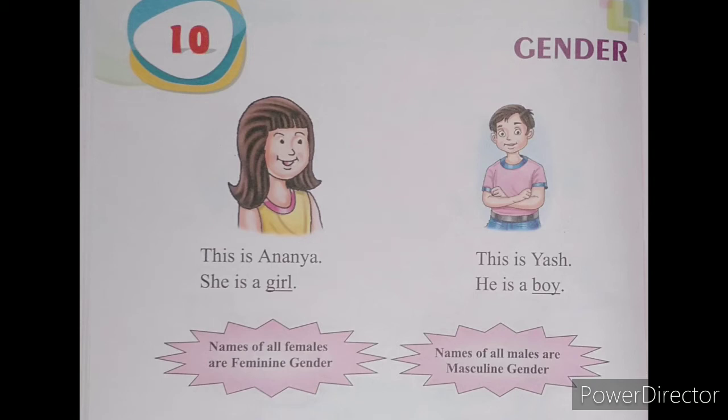'This is Jes. He is a boy.' Here we can see that Jes is a boy, and also denoted with the pronoun 'he'. In the previous chapter we already learned that the pronoun 'he' is used for male. So we can again conclude and understand that names of all males are called masculine gender.